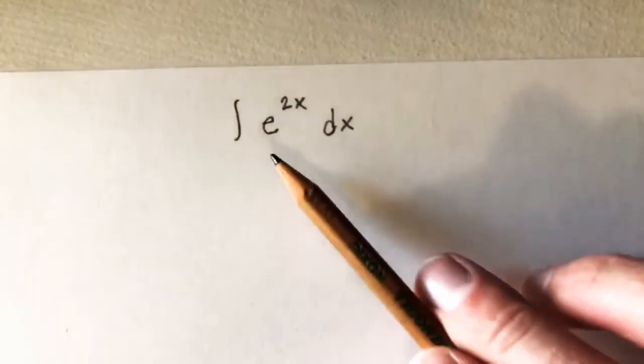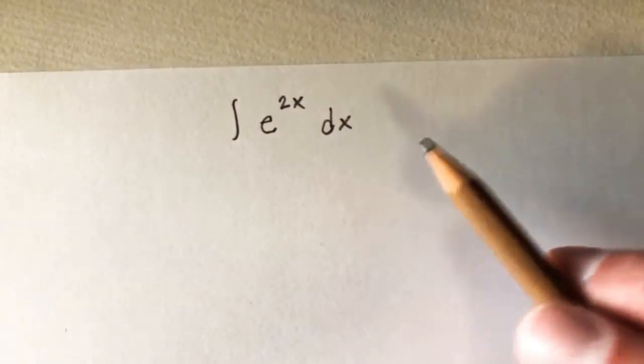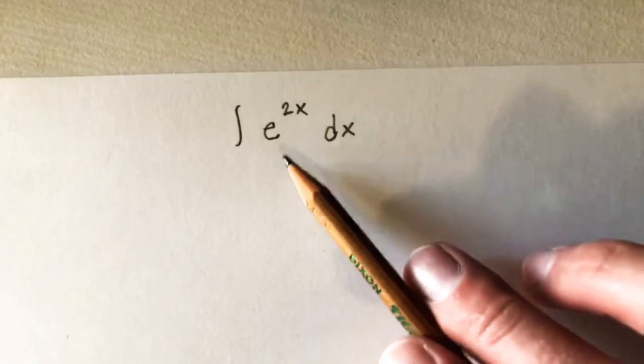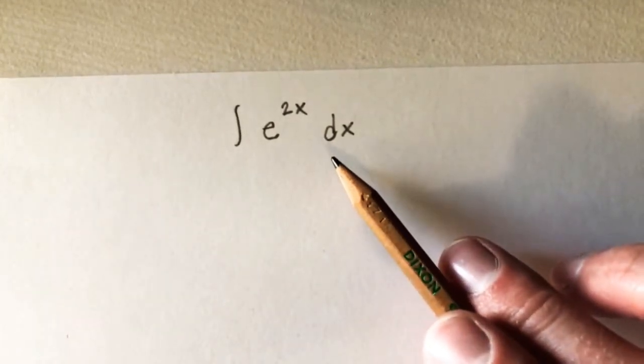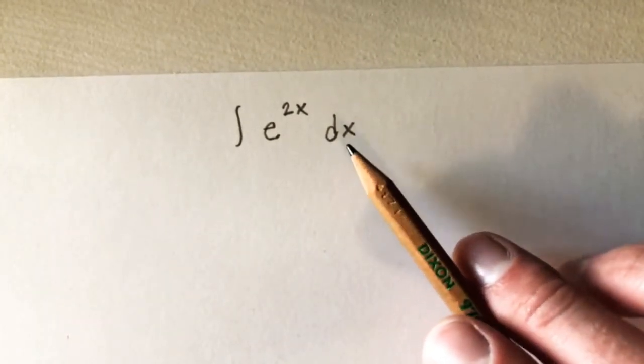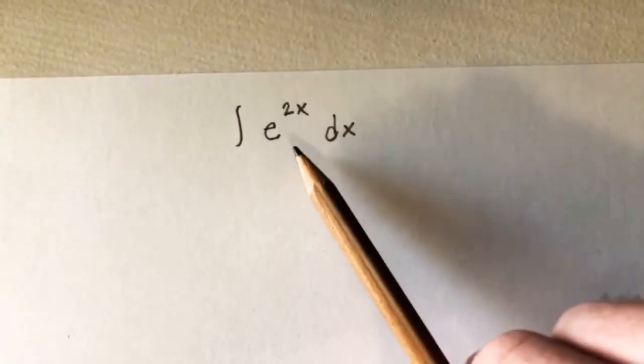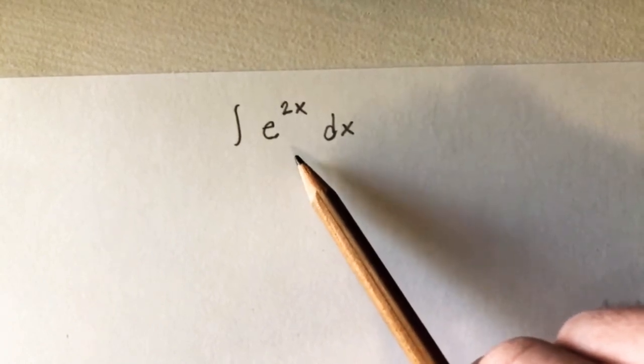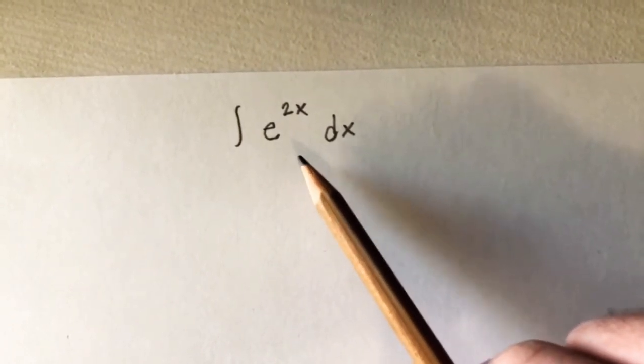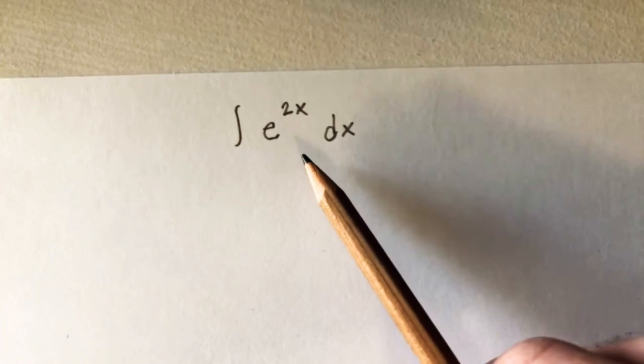So finding the integral of e to the 2x is going to be easiest using u-substitution. When you see a problem like this and you want to try doing it with u-substitution, what you typically want to do is look for which piece of our integral here has that piece's derivative somewhere else in the integral.